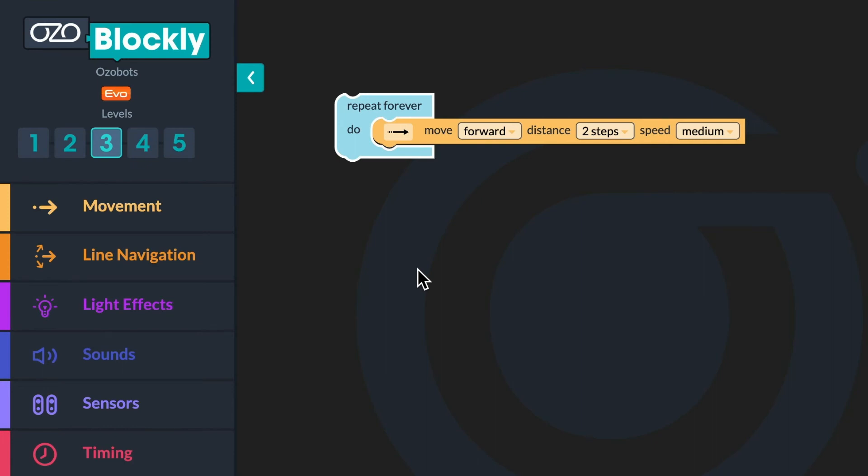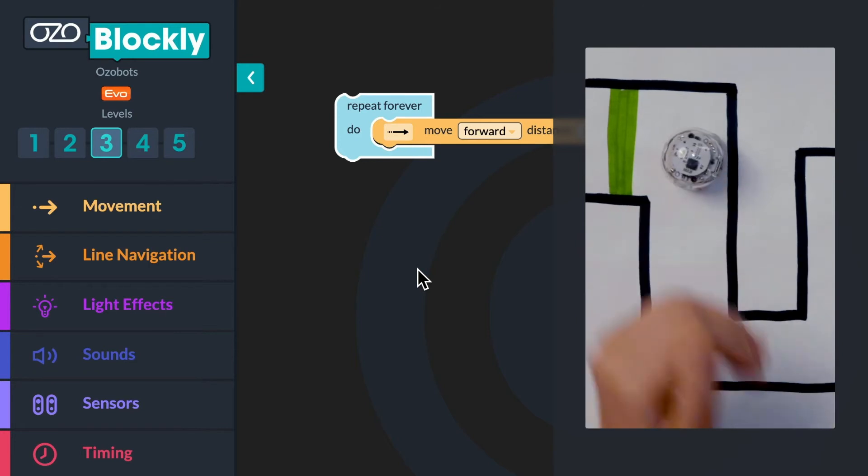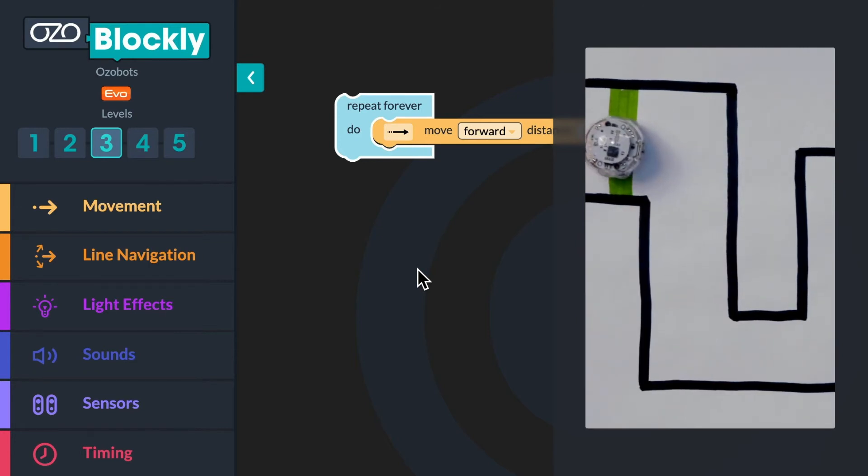You will use conditionals in your code to program your bot to turn when it senses your hands. If the bot senses your hand in front of it, it will turn right. If the bot senses your hand behind it, it will turn left.